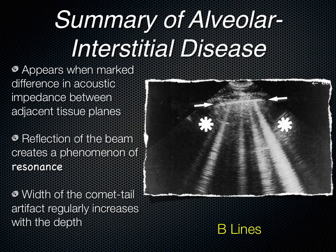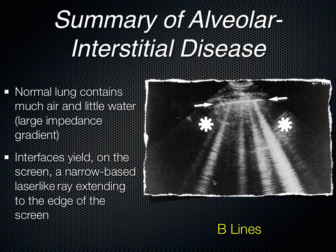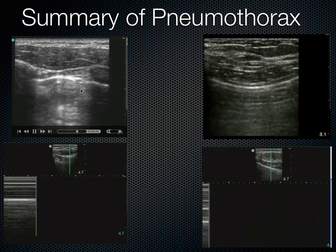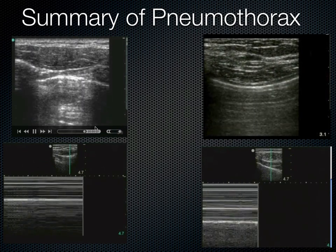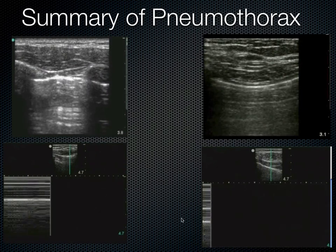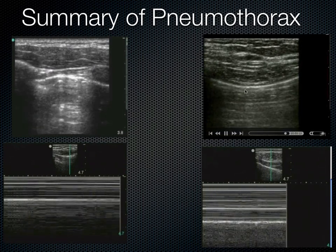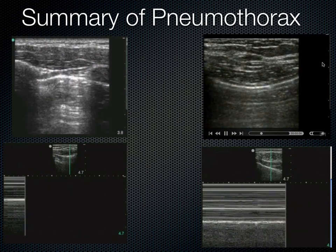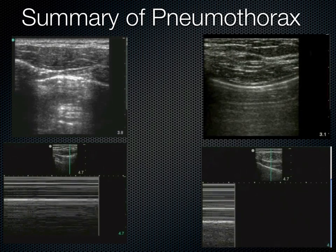To look at alveolar interstitial disease, the pleural line should be where B lines originate — they should go all the way to the edge of the screen and obliterate or mostly obliterate the A lines. For pneumothorax summary: absence of sliding, absence of minor B lines, can have A lines, and in M-mode you'll have barcode sign. In normal lung you have sliding, may have A lines, can often see minor B lines, and with M-mode you'll see sky-ocean-beach.